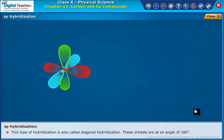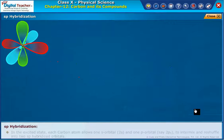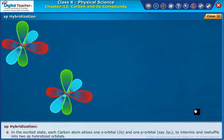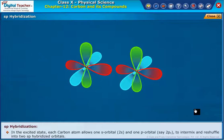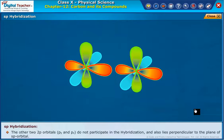These orbitals are at an angle of 180 degrees. Let us consider ethyne C2H2 molecule as an example to know the ability of carbon atom to form one single bond and one triple bond. In the excited state, each carbon atom allows one S orbital, 2s and one P orbital, 2px, to intermix and reshuffle into two SP hybridized orbitals. The other two P orbitals, py and pz, do not participate in the hybridization. They also lie perpendicular to the plane of SP orbital.